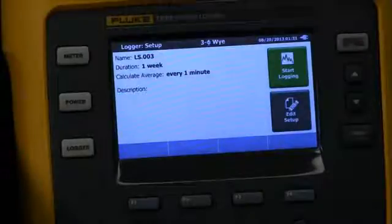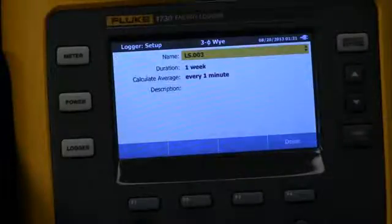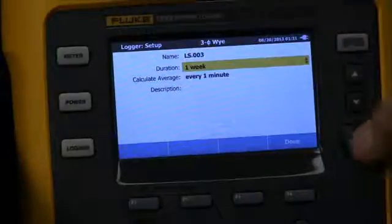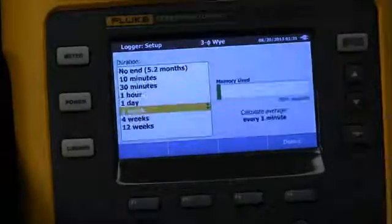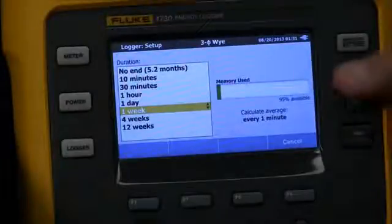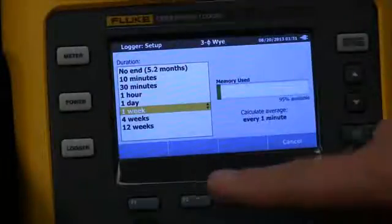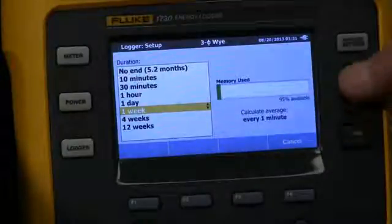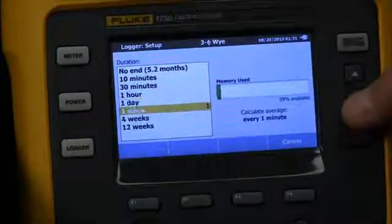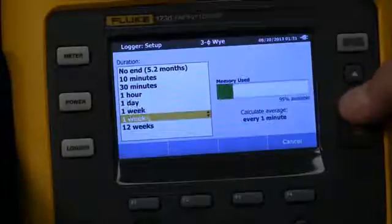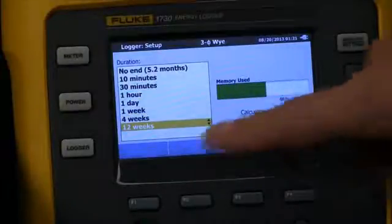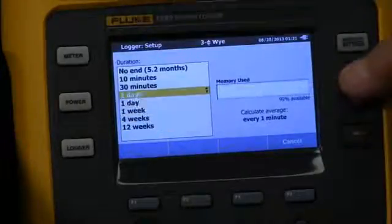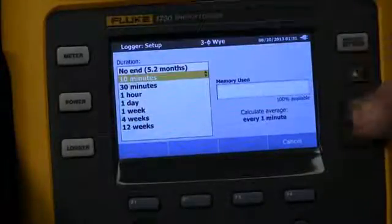When we go into the logging here, let's go ahead and edit the setups. We want to make sure that we've selected the proper duration here. So we scroll down and select enter. Here we select the duration of time. The nice thing about selecting the time is it's also going to show us how much memory is available for that. As we go further and further out, it tells us how much memory will be used for that length of time, whether it's 12 weeks all the way down to 10 minutes for the duration.